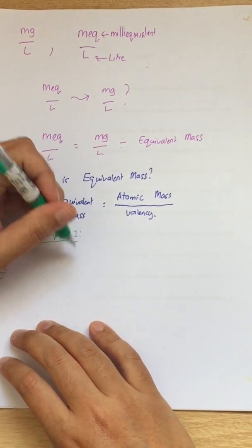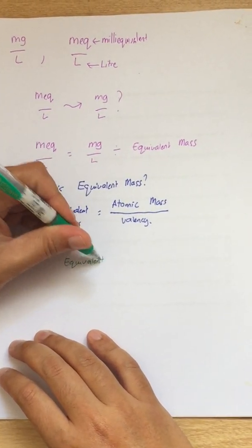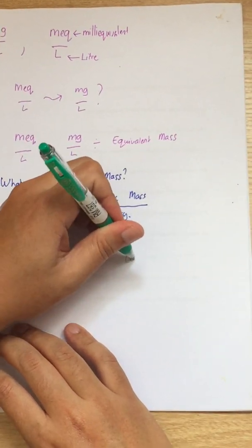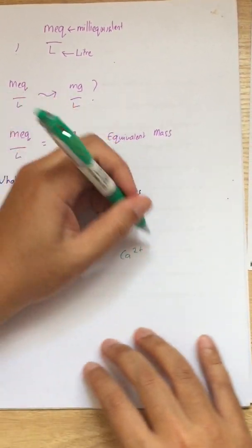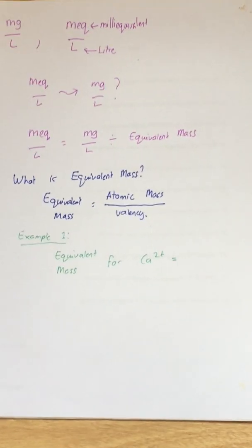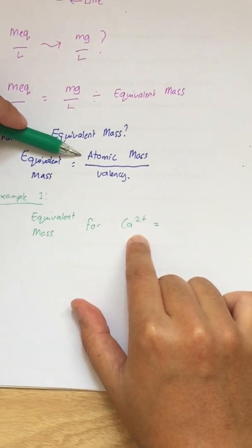Your example one is calculate the equivalent mass for calcium ion. In order to find out the equivalent mass for calcium ion, you have to find out the atomic mass.